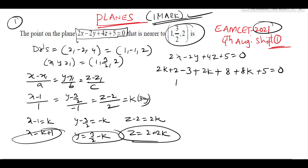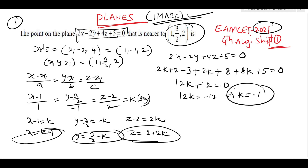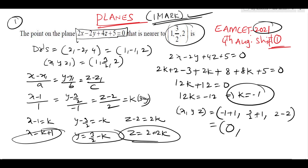Collecting terms: 2k + 2k + 8k = 12k, and constants 2 minus 3 + 8 + 5 = 12, so 12k + 12 = 0, giving k = minus 1. Substituting k = minus 1: x = minus 1 + 1 = 0, y = 3/2 + 1 = 5/2, z = 2 minus 2 = 0. So the required point nearer to the given point is (0, 5/2, 0).